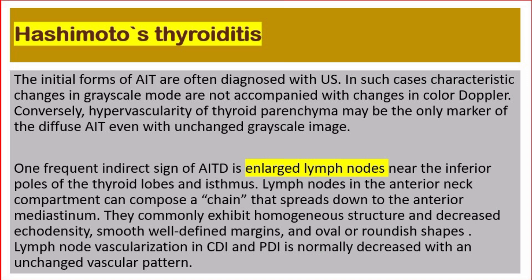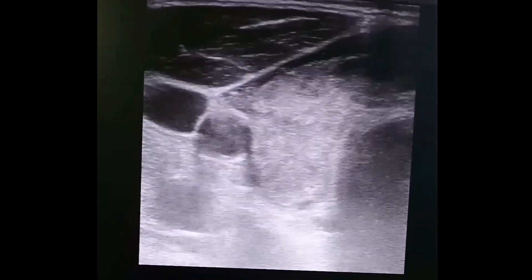One frequent indirect sign of autoimmune thyroiditis is enlarged lymph nodes near the inferior poles of the thyroid lobes and isthmus. Lymph nodes in the anterior neck compartment can compose a chain spreading down to the anterior mediastinum. They commonly exhibit homogeneous structure, decreased echo density, smooth well-defined margins, and oval or roundish shapes. Lymph node vascularization on color Doppler and power Doppler is normally decreased with an unchanged vascular pattern.